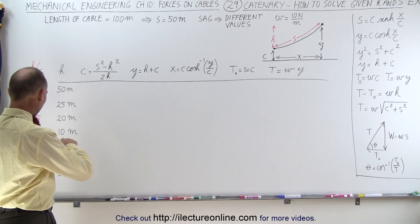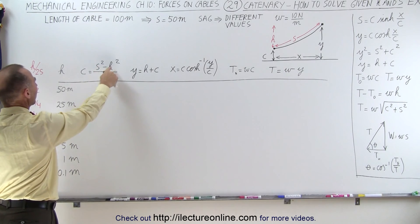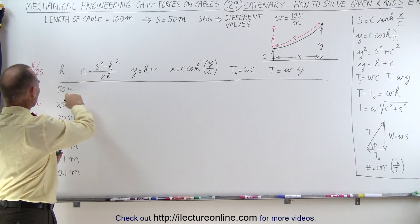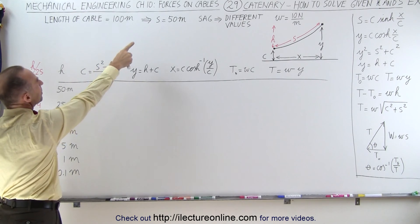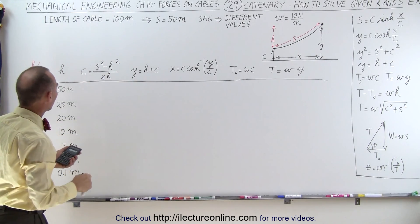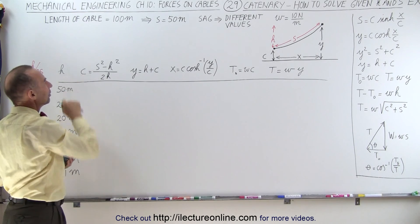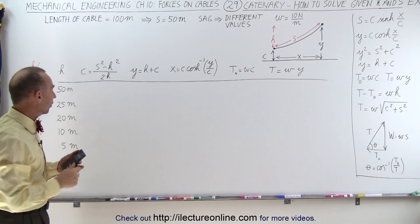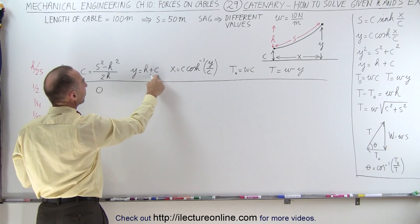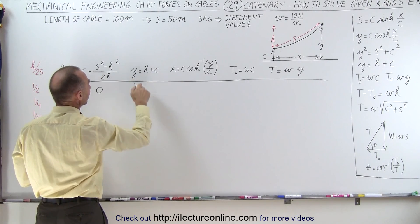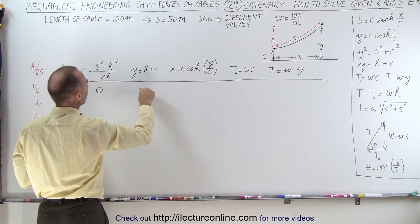To solve for C, we use S squared minus A squared divided by 2H. We have S equal to 50 meters and H equal to 50 meters in this first case, so C is going to be 0. Y is going to be H plus C, but since C is 0, Y equals H, which is 50 meters.